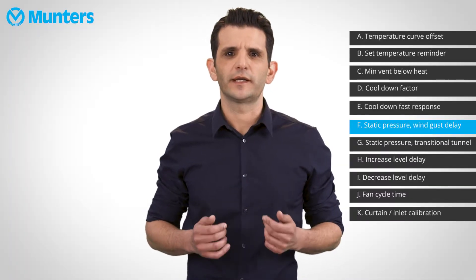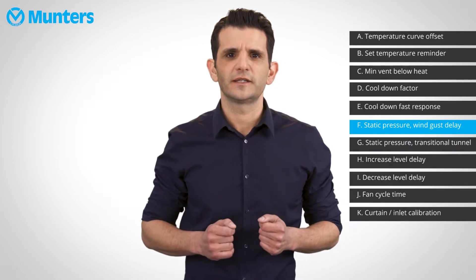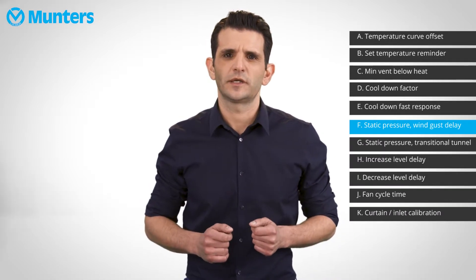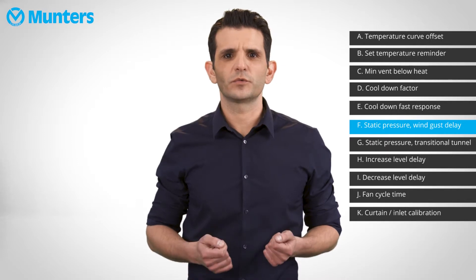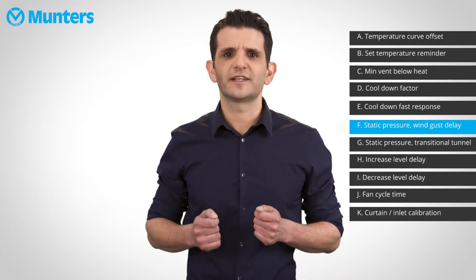Up until now we spoke about changes in temperature and how to protect your ventilation. Now let's talk about pressure changes. The objective of the wind gust delay parameter is to avoid the unnecessary movement of inlets in case of sudden pressure changes. A simple example: someone opens the door to the house and pressure drops. There is no need for the inlets to move in this situation because the door will be closed in a few seconds. This parameter gives us a 10-second delay for these exact situations.